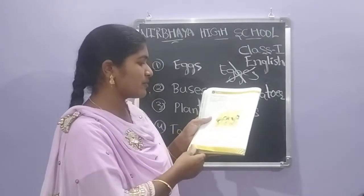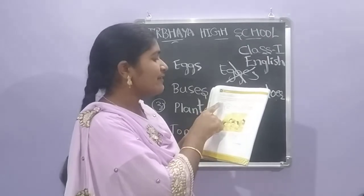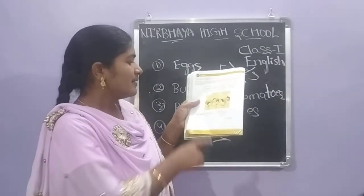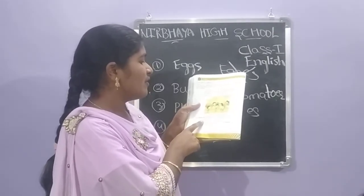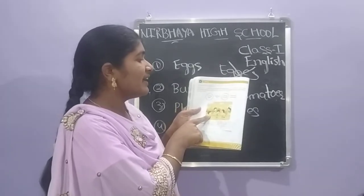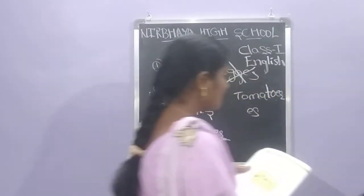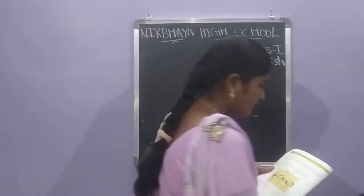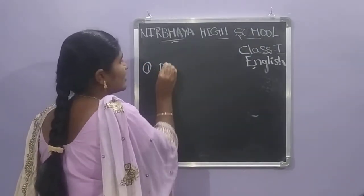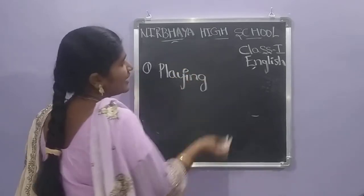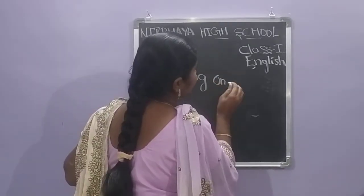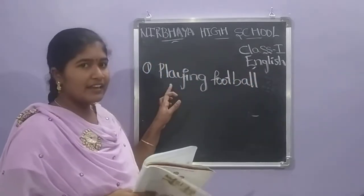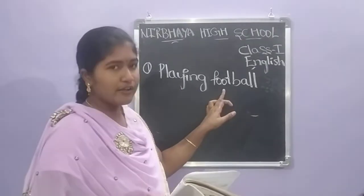Page number 26 — something wrong is taking place in each picture. Say what is wrong and complete the sentences using the words given below. What are the children doing? The children are playing football on the road — P-L-A-Y-I-N-G football — F-O-O-T-B-A-L-L.